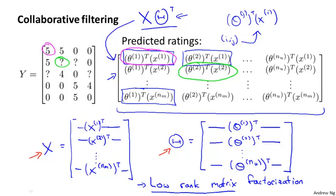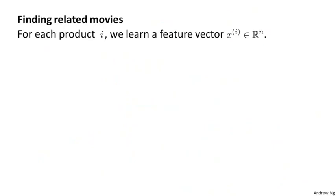Finally, having run the collaborative filtering algorithm, here's something else that you can do, which is use the learned features in order to find related movies. Specifically, for each product i, really for each movie i, we've learned a feature vector x i.